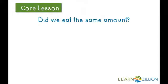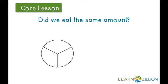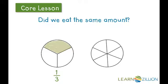In a problem it may look like this. I have a pie that is divided into three equal parts and I eat one part of the pie, so I have eaten one-third of the pie. Let's say you have the same size pie but it's divided into six equal parts and you eat two parts. You will have eaten two-sixths of your pie. Do we eat the same amount?